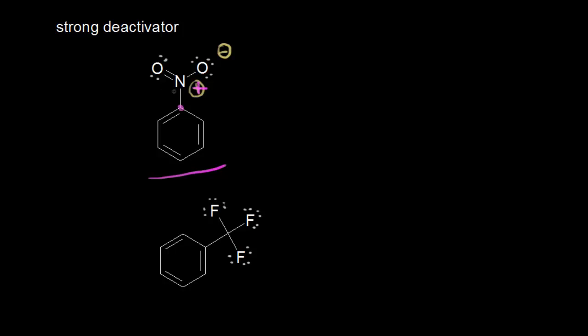We can think about this nitrogen compared to this carbon on the ring — nitrogen being much more electronegative, so it can pull electrons closer to itself. A positively charged nitrogen is extremely electron withdrawing, and it can withdraw electron density from your ring itself. That makes the ring more positive, which would destabilize the sigma complex that results in the mechanism for electrophilic aromatic substitution. Since the sigma complex is less likely to form, that would deactivate the ring towards electrophilic aromatic substitution.